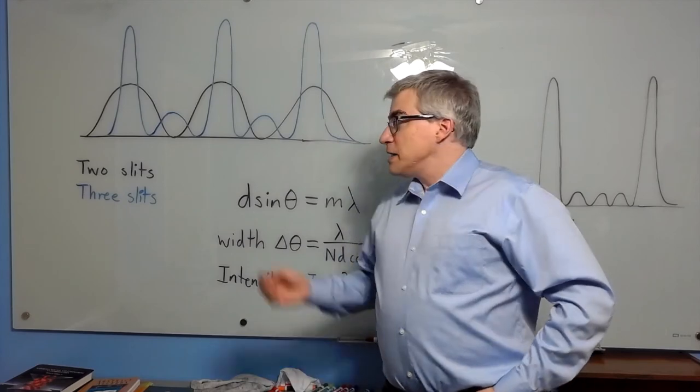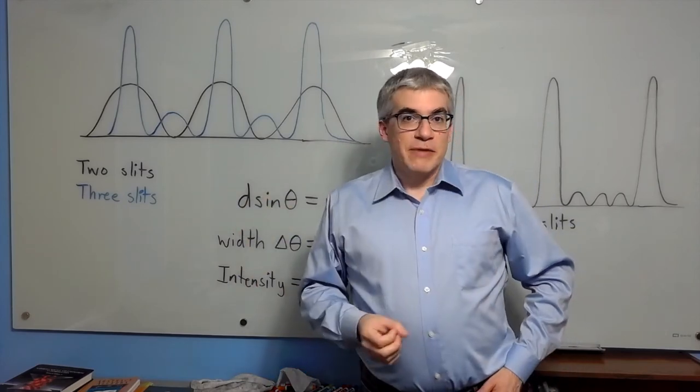And a diffraction grating is just a multiple-slit thing with a very large n. In the examples I just covered, we were adding slits but not changing the spacing. A diffraction grating, they usually make the spacing narrower and narrower as well.